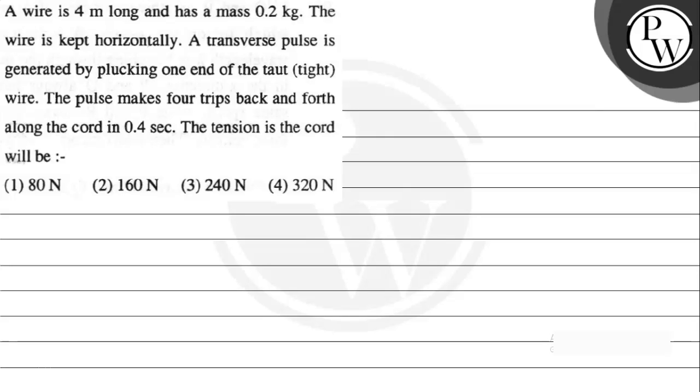Hello Bacho, let's read the given question. A wire is 4 meters long and has a mass of 0.2 kg. The wire is kept horizontally. A transverse pulse is generated by plucking one end of the taut wire. The pulse makes four trips back and forth along the cord in 0.4 seconds. The tension in the cord will be: option 1, 80 newton; option 2, 160 newton; option 3, 240 newton; option 4, 320 newton.